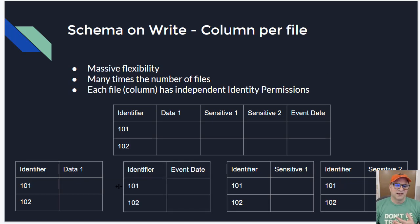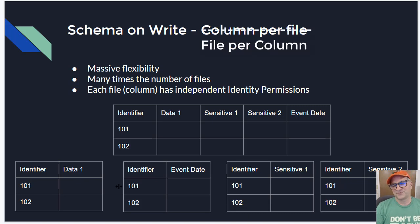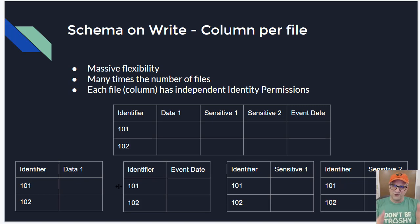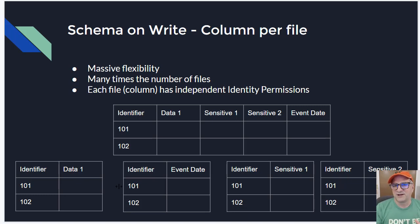The last version to talk about is schema on write column per file, or file per column. The notion is that each column is in its own file, and the consumer just picks up the columns they want and assembles those into a row. So if I've got a million rows, I'll actually have four million rows stored — a million rows for each of the four files — and then assemble those together. The beauty of this is we can totally mix and match permissions on a per-column basis, though it's the consumer library's job to assemble all that back together to make the table look correct.